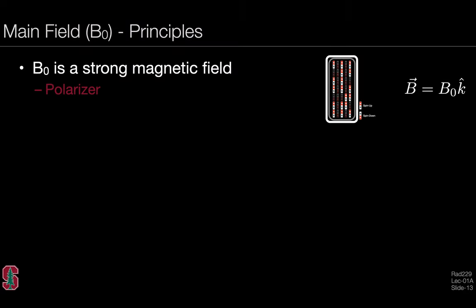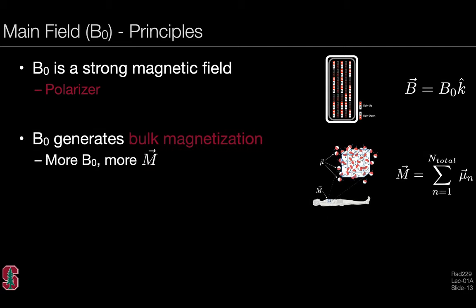Let's think about some principles of the main B0 field. B0 is a strong magnetic field that importantly serves to polarize the spin system or the hydrogen nuclei being used in the imaging experiment. There's the concept of the spins pointing up or down in low and high energy states that gives rise to a net polarization available for detection. B0 generates bulk magnetization—the more B0 we have, the more bulk magnetization we have. This fundamentally underlies the drive to explore higher field systems: 7T systems, 9.4T systems, etc.